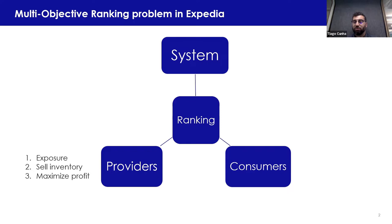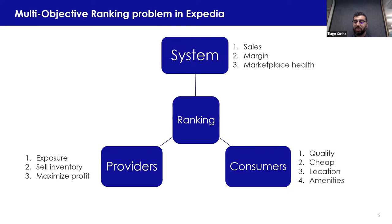Providers want to have exposure — otherwise if they are not shown to customers, they cannot be bought. They want to sell inventory and maximize profit. Consumers want good properties, cheap prices, and great locations with the best experience possible. The system itself wants to maximize sales and its margin, but it also needs to take into account marketplace health objectives.